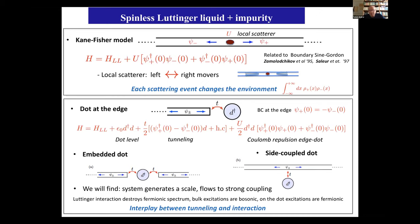A quantum impurity means that once one particle crosses the impurity, the next one will find a totally different system — all particles become correlated through this quantum impurity. It's very different from a fixed potential where every particle that scatters leaves it unchanged and the next particle finds it in the same state. Here the system changes every time a particle passes.